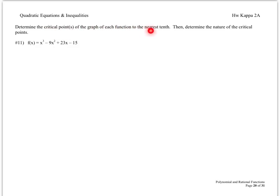Determine the critical points of the graph of each function to the nearest tenth — that's one decimal place — and determine the nature of the critical points: minimum, maximum, or inflection point. Before we even do this problem, looking at the lead term x cubed tells us the graph will look like the x cubed parent. If there are three critical points, it's a maximum followed by an inflection point followed by a minimum. If there's one critical point, it's an inflection point.